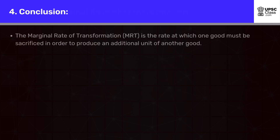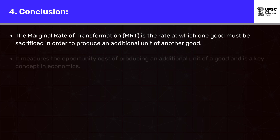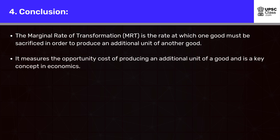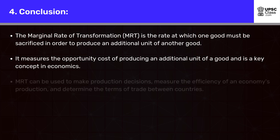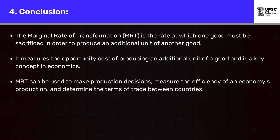In conclusion, the marginal rate of transformation, MRT, is the rate at which one good must be sacrificed in order to produce an additional unit of another good. It measures the opportunity cost of producing an additional unit of a good and is a key concept in economics. MRT can be used to make production decisions, measure the efficiency of an economy's production, and determine the terms of trade between countries.